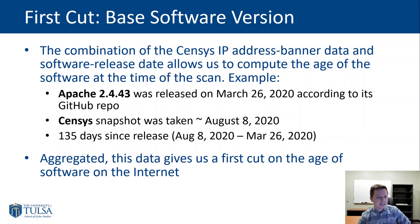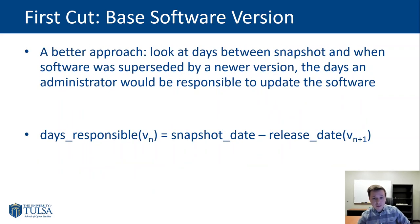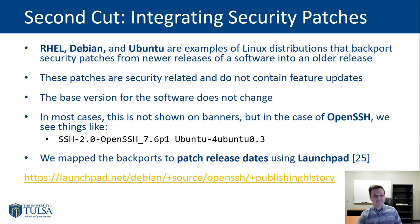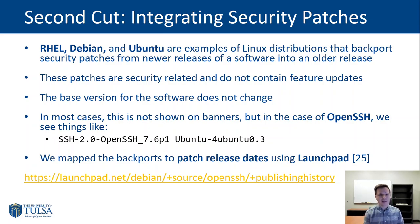Because if the release cycle is every week, maybe that's pretty outdated. But if a new version of Apache is only released every six months, then six months old is not too bad. So we revised this by looking at the days since the software was superseded — in other words, the days that an administrator could have updated the software. That helps, but as we'll see, it's still a very surface-level view. Red Hat Enterprise Linux, Debian, and Ubuntu are all examples of Linux distributions that backport security patches into software in their repositories.